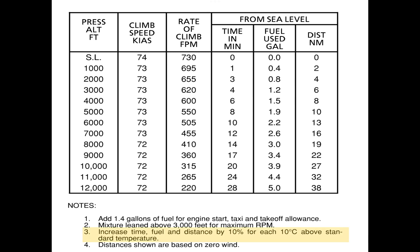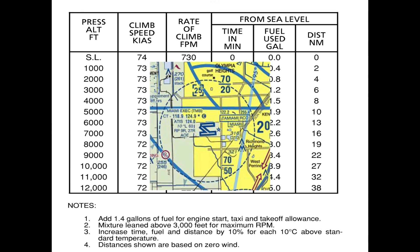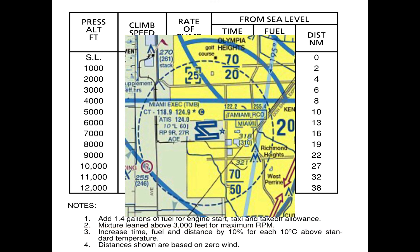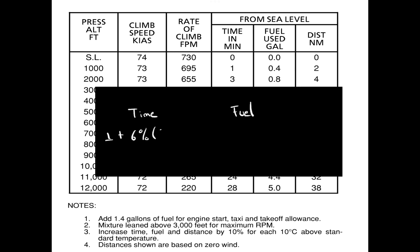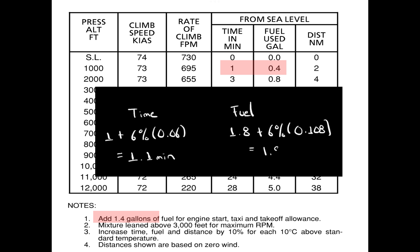To continue, Note 3 specifies that we have to increase our time, fuel, and distance by 10% for each 10 degrees above standard temperature. Considering that we are climbing out of Miami Executive Airport, which has a field elevation of only 10 feet, our ISA temperature at that altitude will be approximately 15 degrees Celsius. And considering our actual surface temperature that we previously calculated was 21 degrees, we will be 6 degrees above standard temperature. Therefore, we will have to add 6% to the values presented on the table, which results in a time to climb to 1,000 feet of approximately 1.1 minutes and a fuel burn of approximately 1.9 gallons.